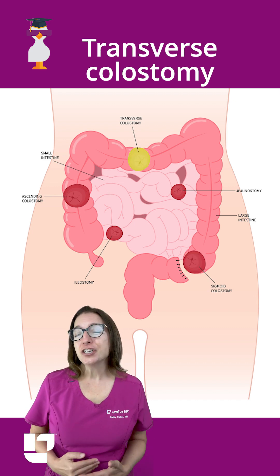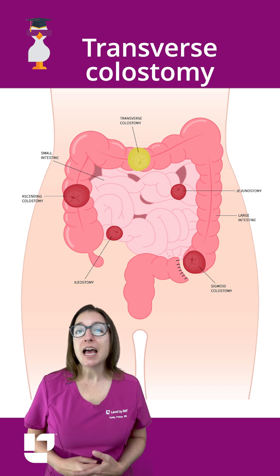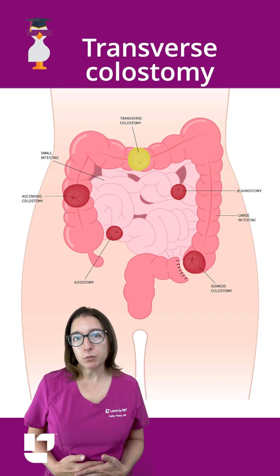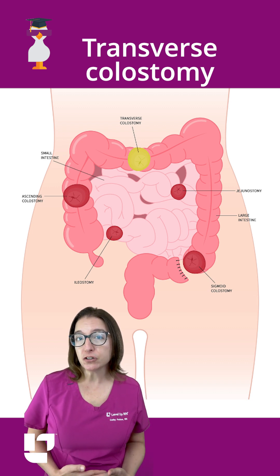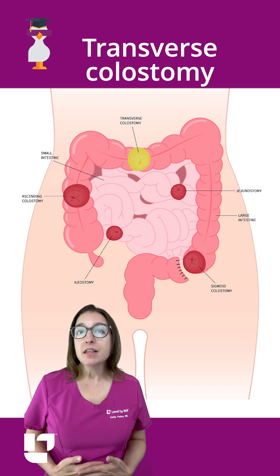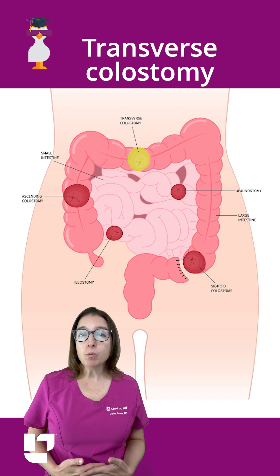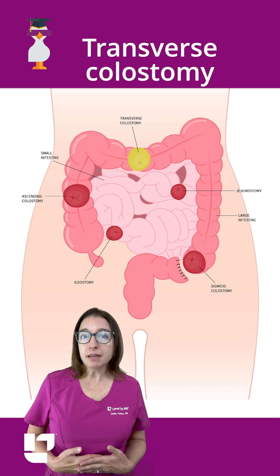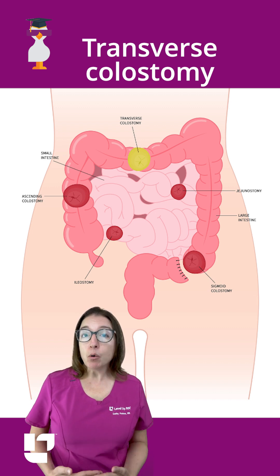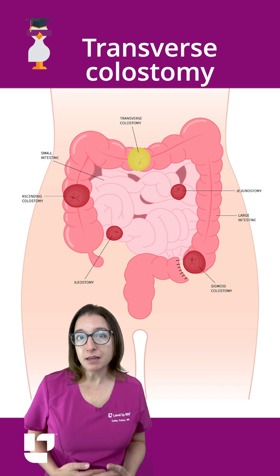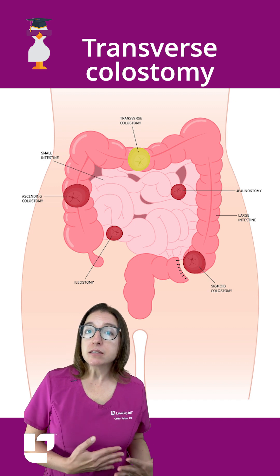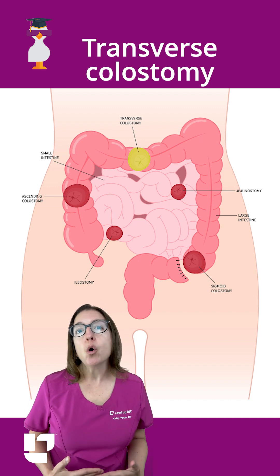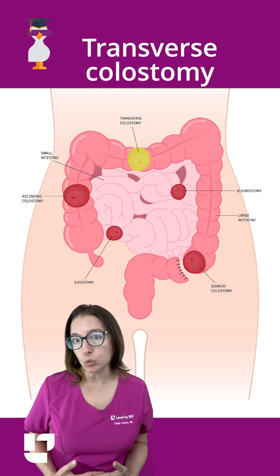A transverse colostomy is created out of the middle part of the colon, which is the transverse colon. The stoma will be located in the upper abdomen. Output from a transverse colostomy may be soft or resemble loose oatmeal-like stool.